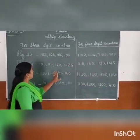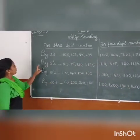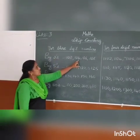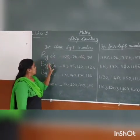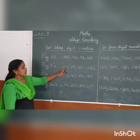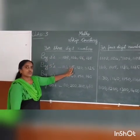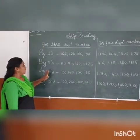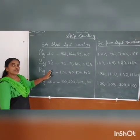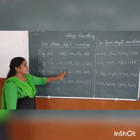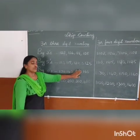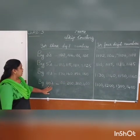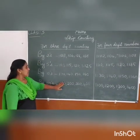One more clear summary. By 2s, jump 2. By 5s, jump 5. By 10s, jump 10. By 100s, jump 100.